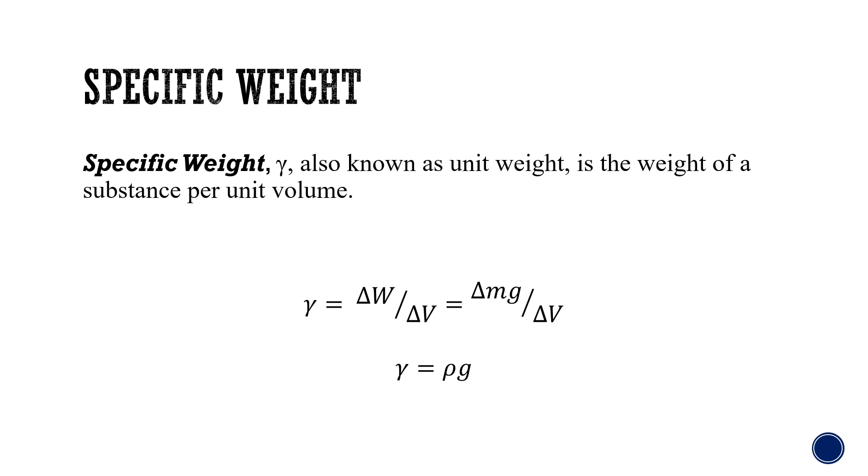To calculate specific weight, there are several formulas that can be used and simplified. The specific weight can be calculated from the change in weight over the change in volume, or you can use mass times gravity divided by volume. From that, you can also calculate the specific weight by multiplying density by gravity.